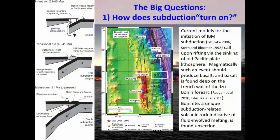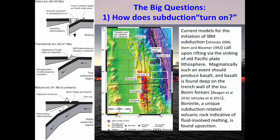There are really two big questions we're trying to answer in this expedition. One is: how does subduction turn on? How do we start subducting something and what happens when we do? The Izu-Bonin volcanic arc has been the key locality for studying this question for the last roughly 30 years, because it's oceanic, it's not heavily sedimented, so we can get to igneous rocks pretty readily, and there are emergent islands with interesting rocks on them.